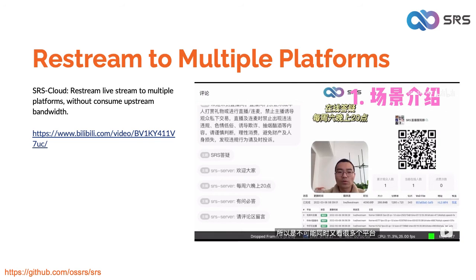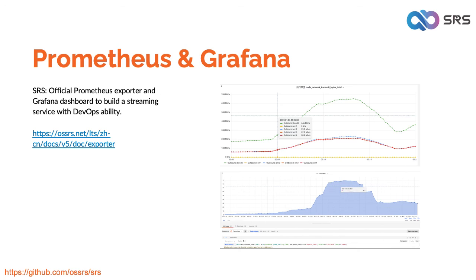Do you want to broadcast your live streams on multiple platforms like YouTube, Facebook, Twitch, and TikTok? The SRS cloud simplifies this task and doesn't use up your bandwidth since it takes care of the restreaming for you. Prometheus, a well-known open source monitoring system, is natively supported by SRS through its exporter, letting you keep an eye on the SRS server. Visualize metrics with Grafana, and look forward to Prometheus and Grafana being integrated into the SRS cloud in the future.